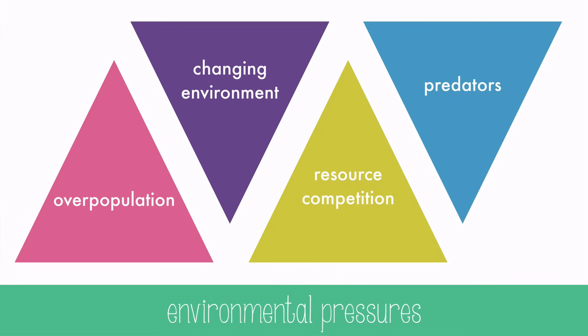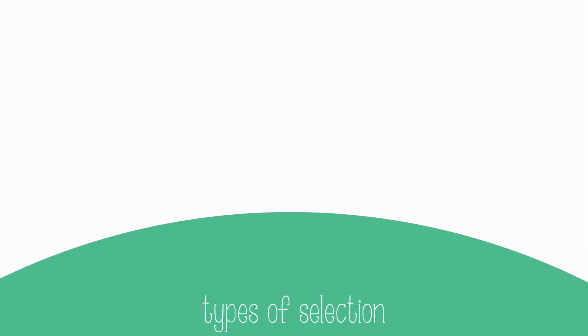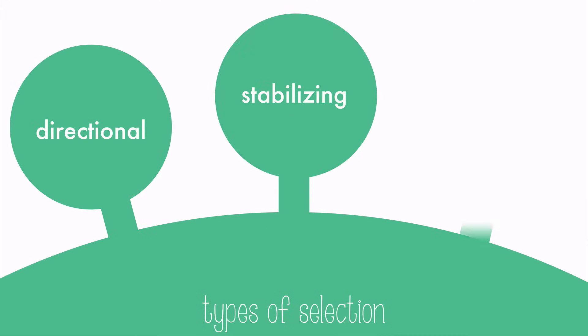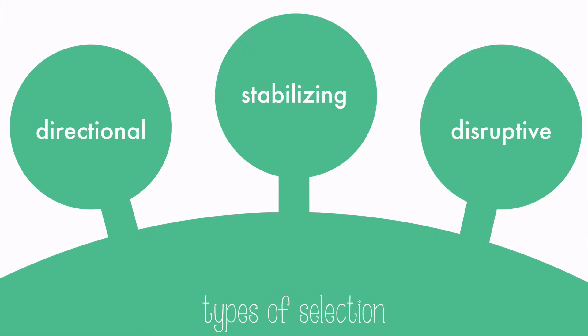And when it does occur, there are three types of natural selection: directional, stabilizing, and disruptive.